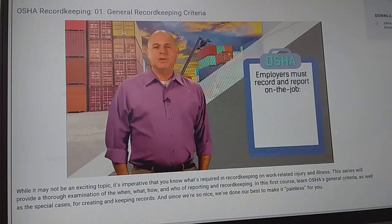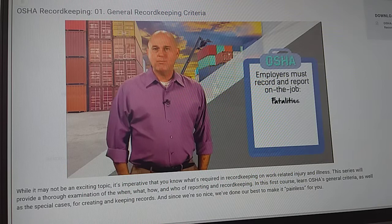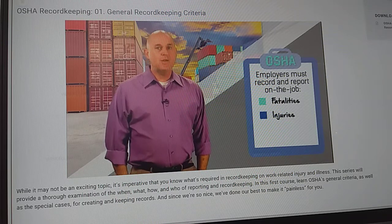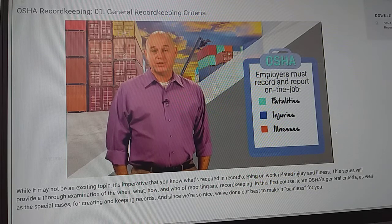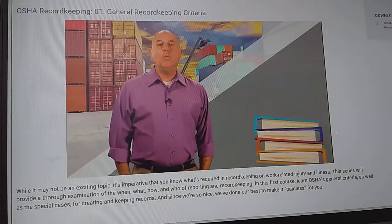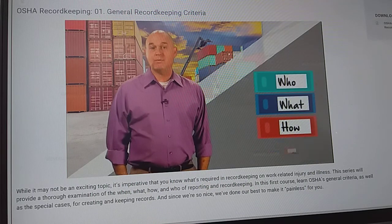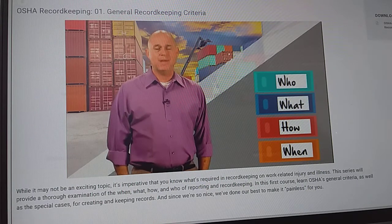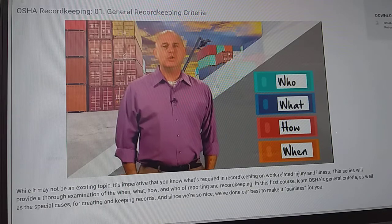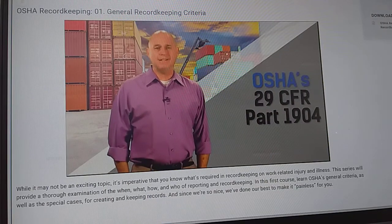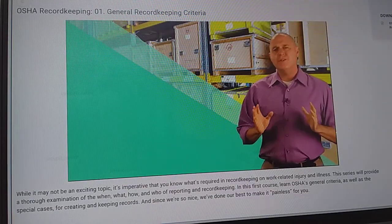OSHA requires employers to record and report on-the-job fatalities, injuries, and illnesses. For answers about who, what, how, and when to record and report work-related fatalities, injuries, and illnesses, we look to OSHA's 29 CFR Part 1904.